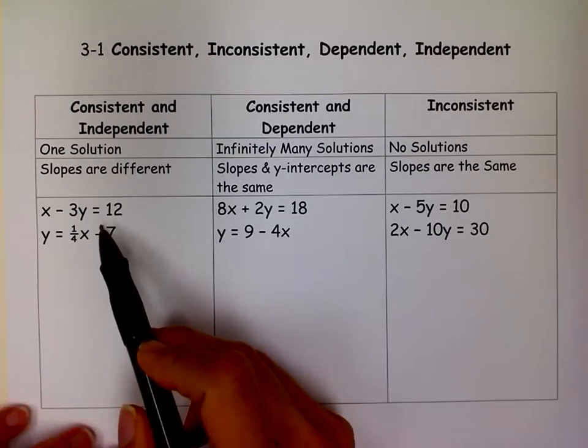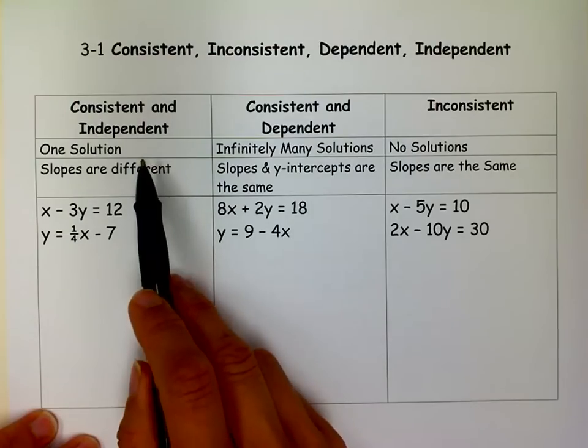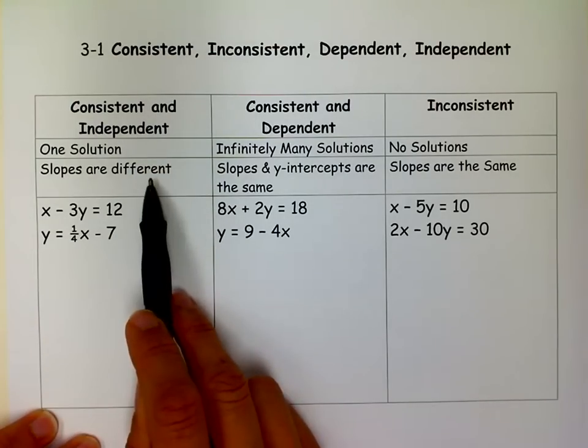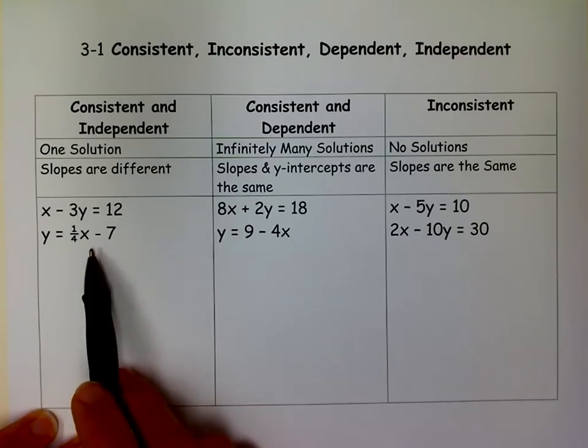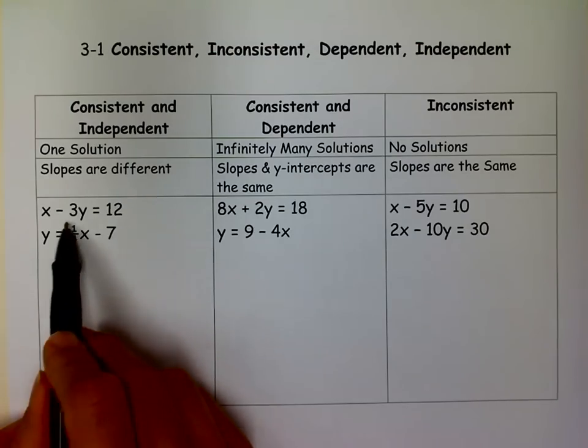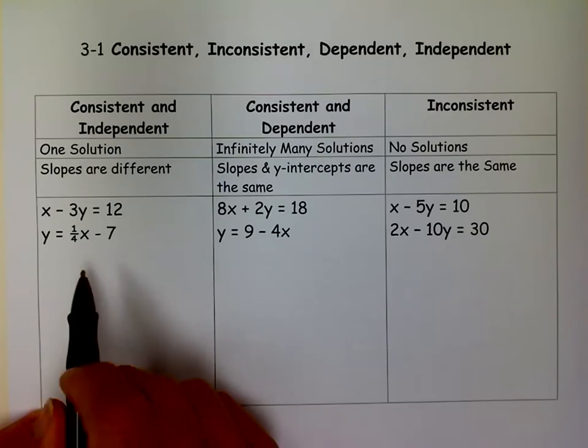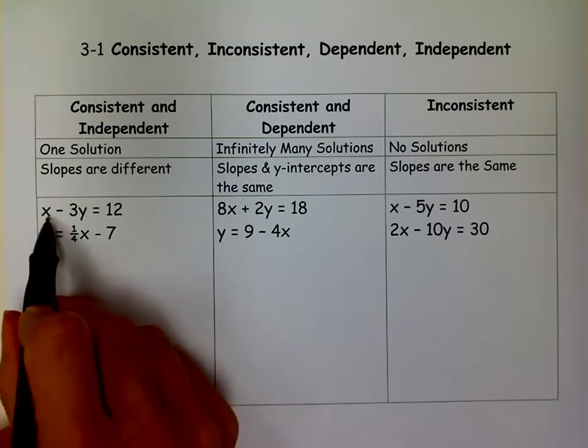So when you have a consistent and independent linear system, you have the slopes that are different. Sometimes if you don't have to graph them, you could just solve this for y, which means we're getting it in slope-intercept form, to see if the slopes are different.